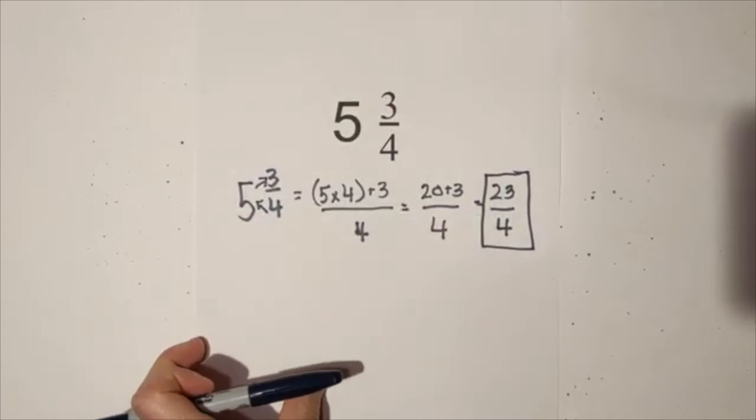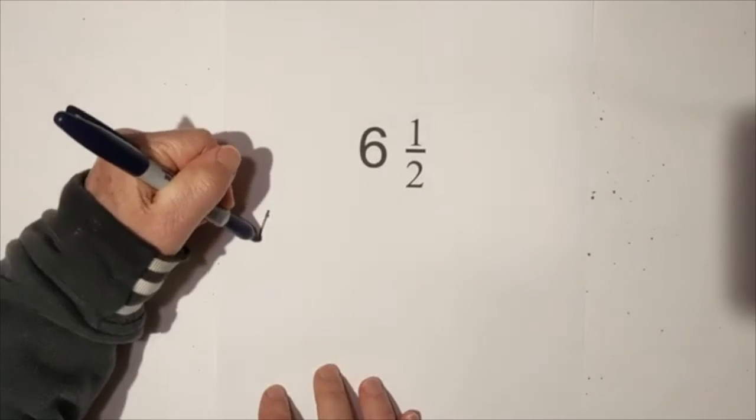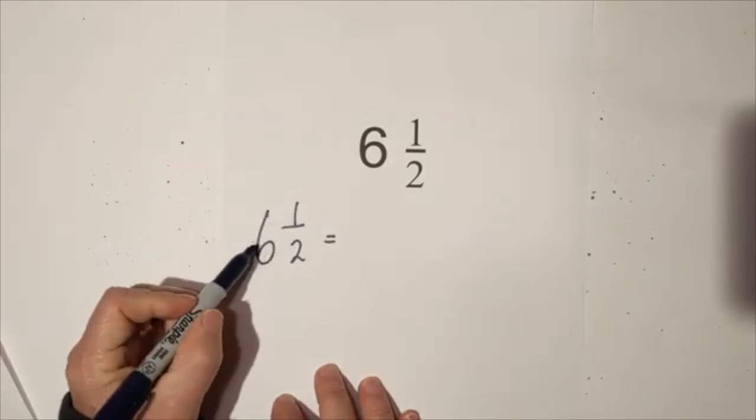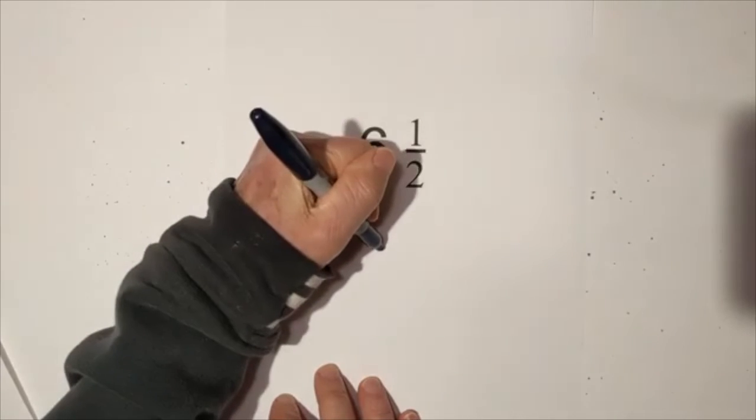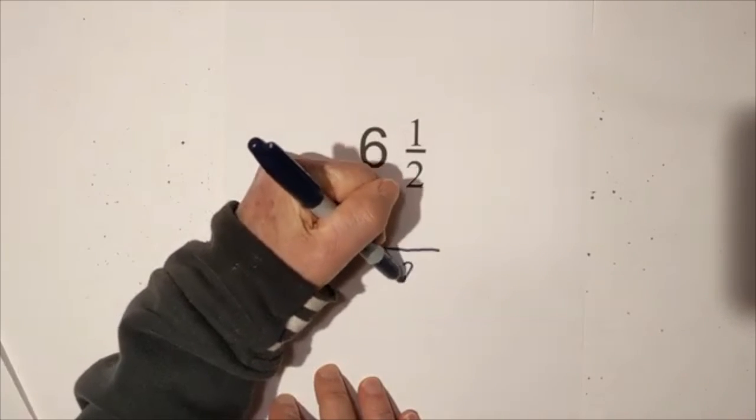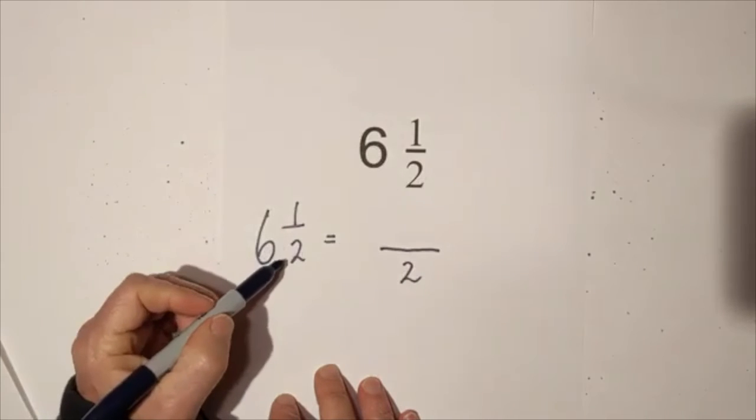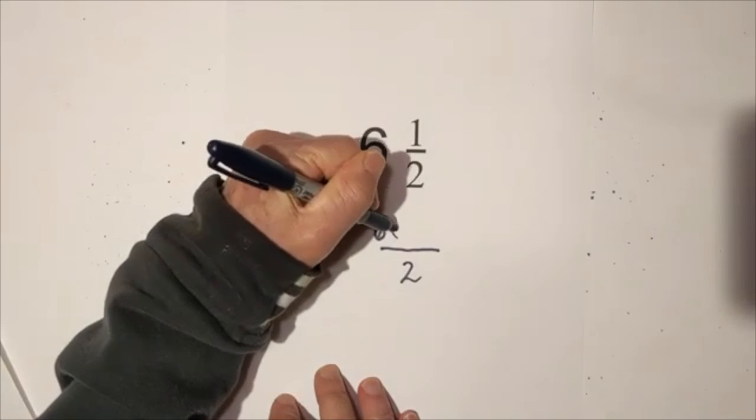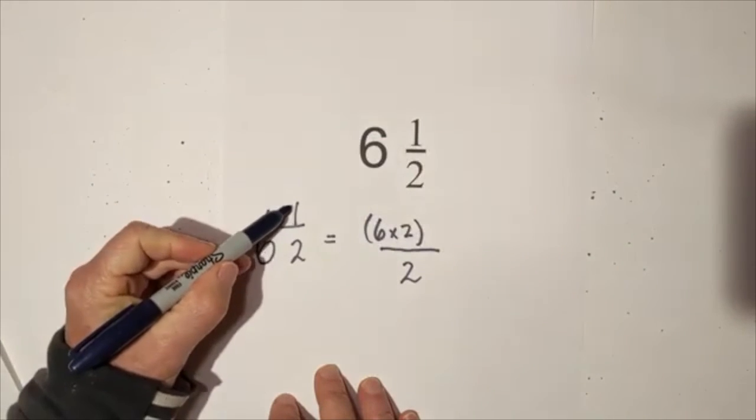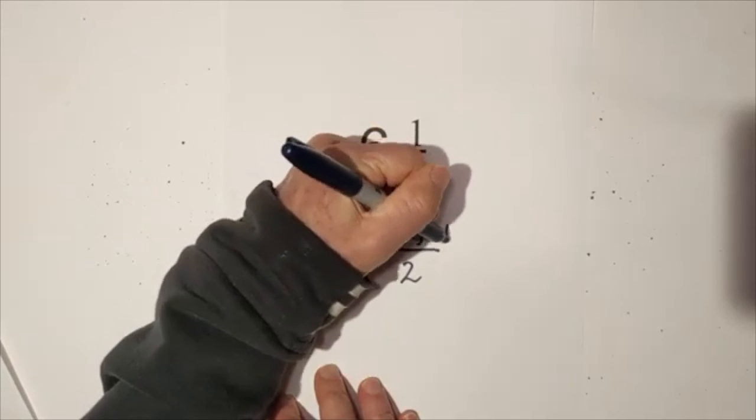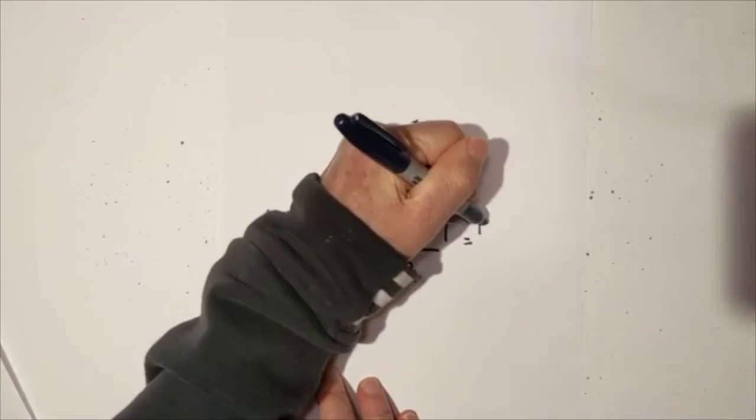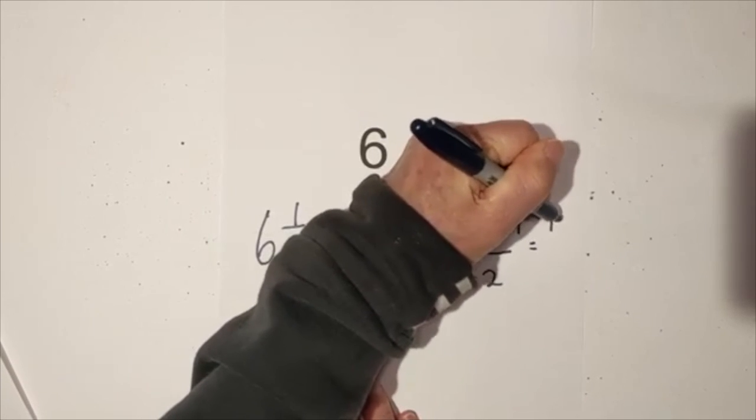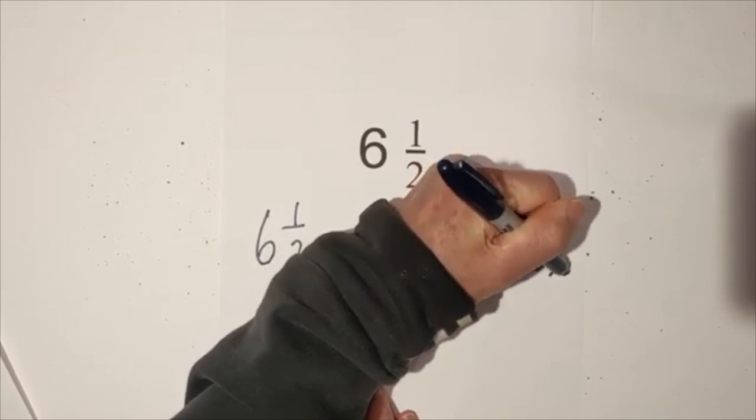Now let's work another one. We have 6 and a half. I'll rewrite it. 6 and a half equals, remember we have a whole number mixed number. The denominator will remain the same as the fraction. We have 6 parts and each one is worth 2. So we will have 6 times 2. And then we add the numerator, and that equals 12 plus 1 over 2, which equals 13 halves.